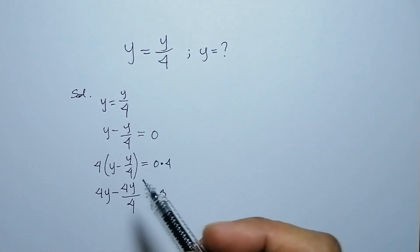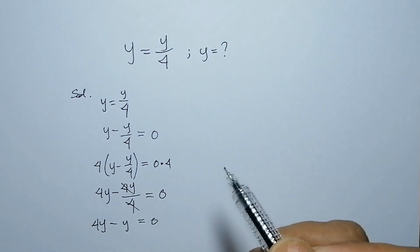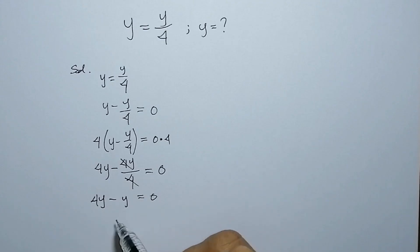Now we are going to cancel out the 4. 4y minus y equals 0. By subtraction, 4y minus y is 3y, is equal to 0.